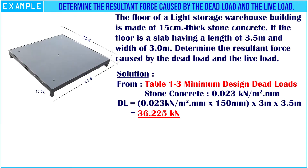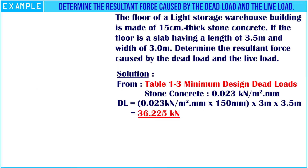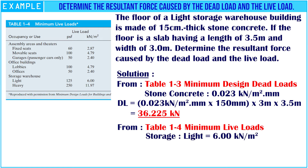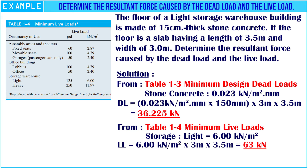Next, we need to find the live load of the slab. Looking at Table 1.4 about minimum live loads, we see the light weight storage warehouse is 6 kN per square meter. We multiply the minimum live load by the length and width of the slab. The answer for the live load of the slab is 63 kN.